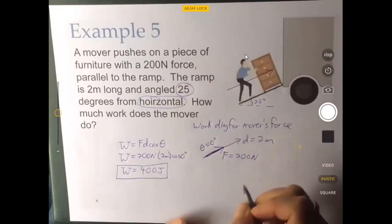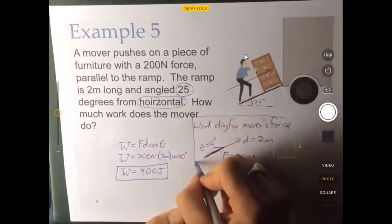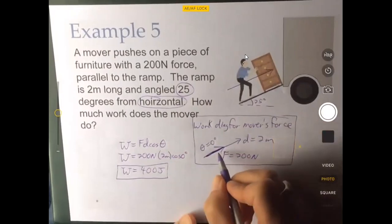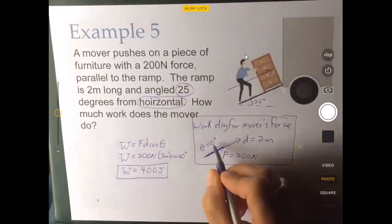The main thing I want you to take away from this is that we didn't use that 25 degrees. And the reason we need to do that is because we drew a work diagram. With the work diagram it becomes very clear that the angle between the force and the displacement is zero degrees.